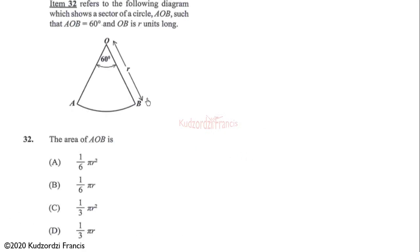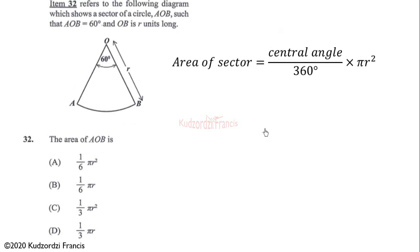Now let's look at question 32. Item 32 refers to a diagram showing a sector of a circle where the central angle is 60 degrees and OB is r units long — that is the radius of the sector. The area of a sector is given by the central angle divided by 360 degrees times the area of the circle, which is pi r squared.